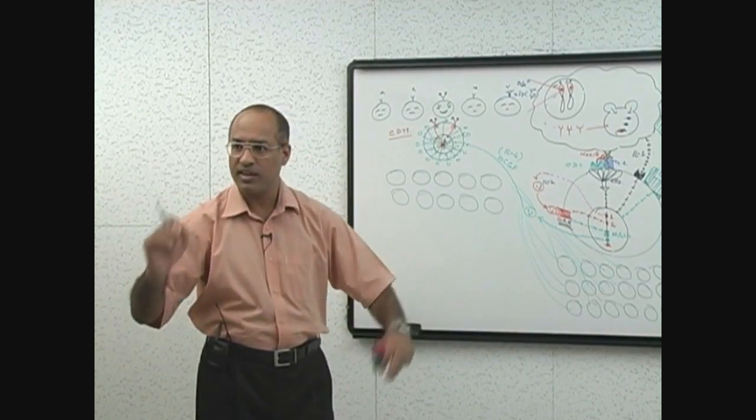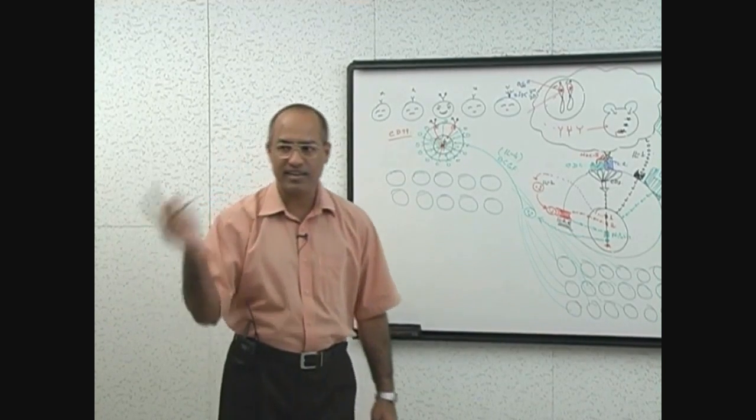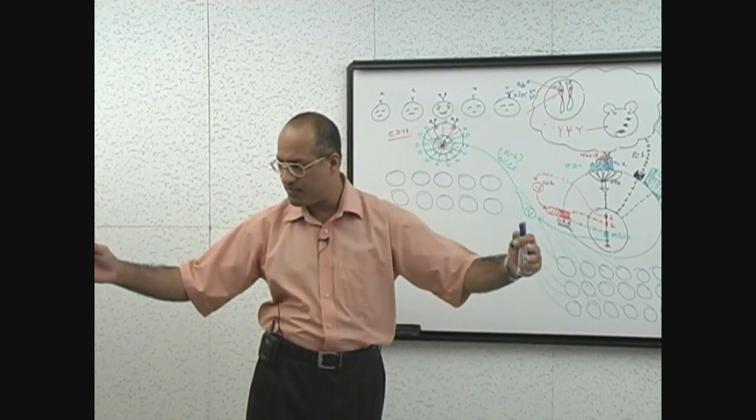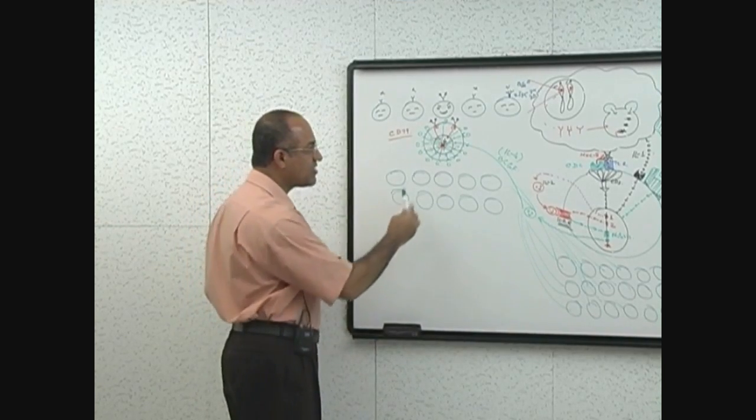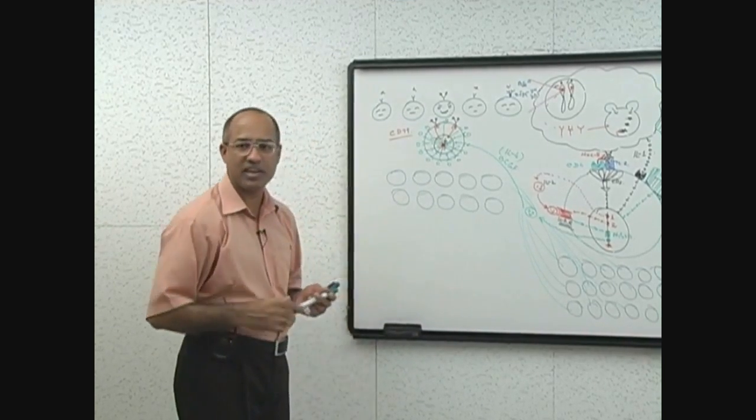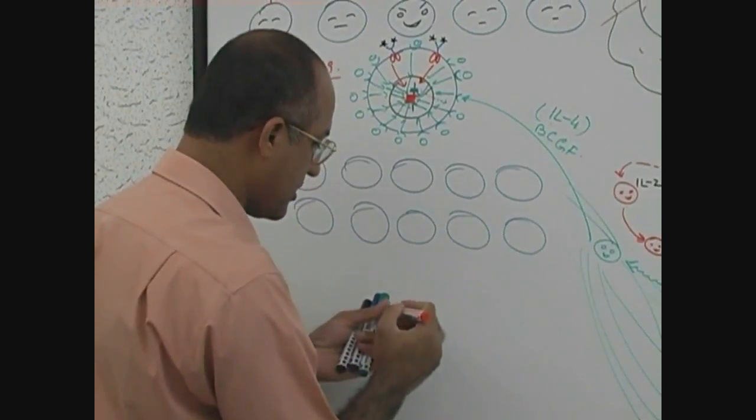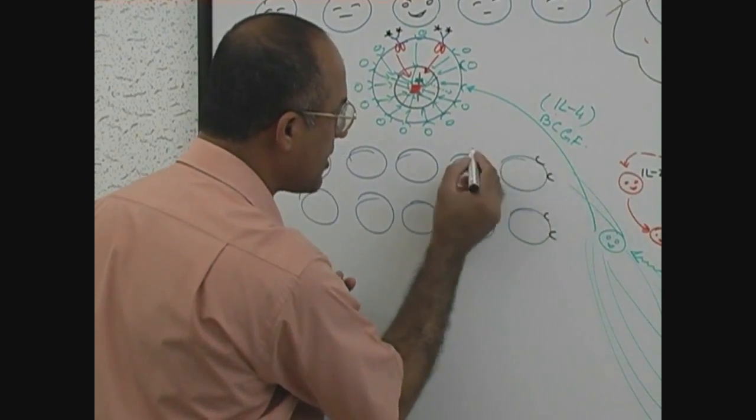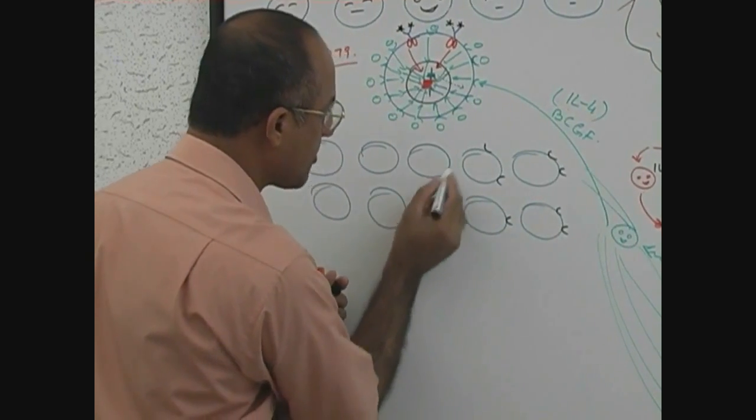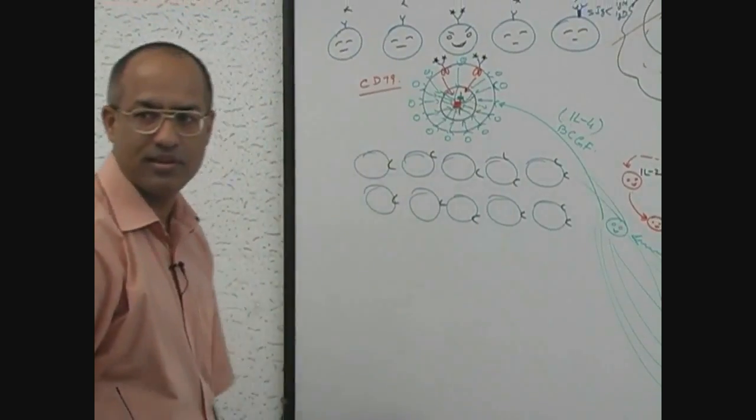Now in the lymph node, those B cells which have a capability to make anti-star antibodies, those B cells multiply. Now, once these B cells have done enough multiplication, they start expressing another type of receptor. It means they are getting ready for another type of stimulation.